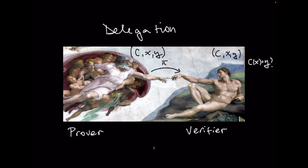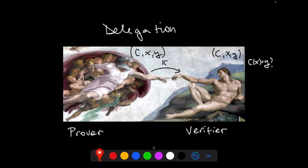What is a delegation scheme? In a delegation scheme, a computationally constrained verifier would like to delegate some heavy but still polynomial time computation — represented by some circuit C — and the statement the verifier would like to check is whether C evaluated on X outputs Y. The verifier delegates this computation to a more powerful but still polynomial time prover, which evaluates the circuit but also produces some proof π which is sent to the verifier. This could be interactive, but in this case it's just one message. The verifier then checks the proof, and checking the proof should take less time than just evaluating the circuit.